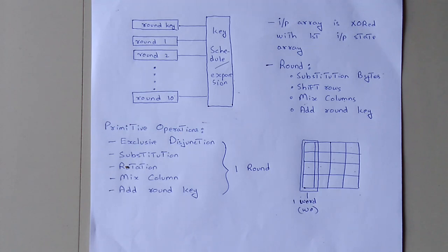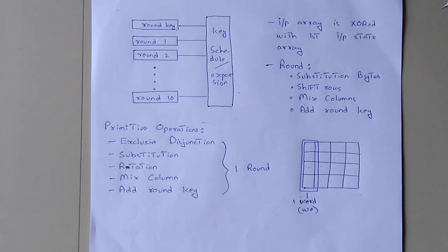We take one byte value — for example, the value at position 0-0 — and find the corresponding substituted value in the S-Box lookup table. At position 0-0 in the lookup table, we get the substituted byte. That is the SubBytes substitution.